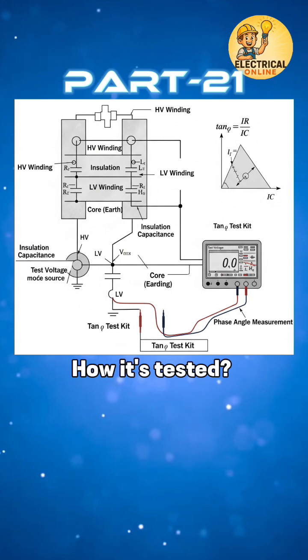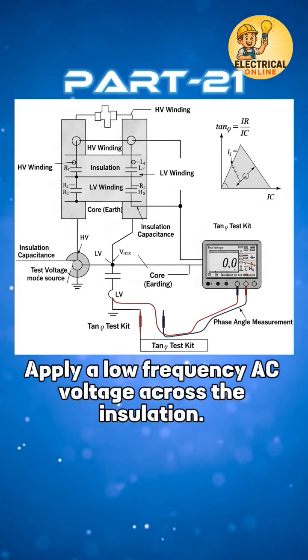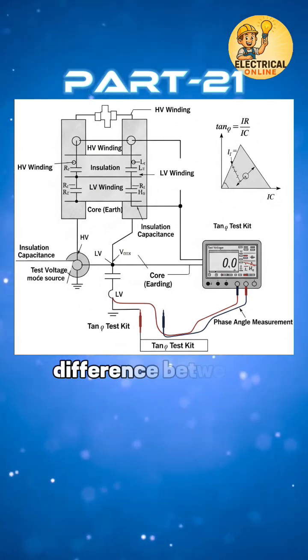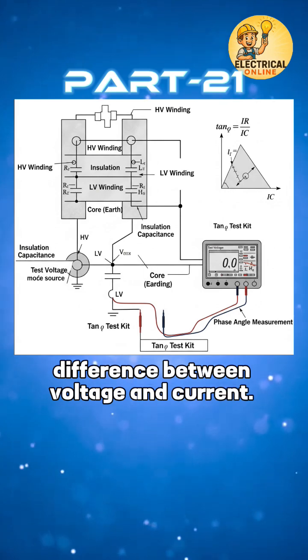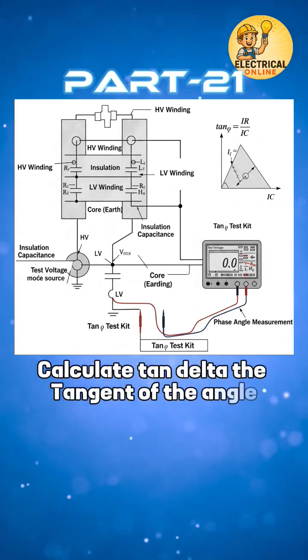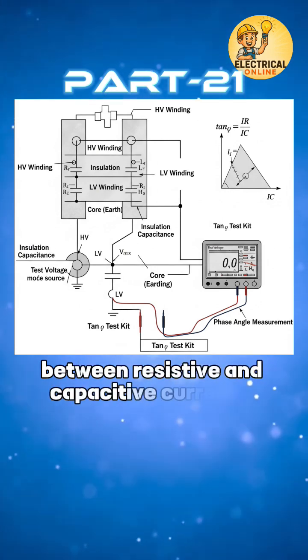How it's tested. Apply a low frequency AC voltage across the insulation, measure the phase difference between voltage and current. Calculate tan delta, the tangent of the angle between resistive and capacitive currents.